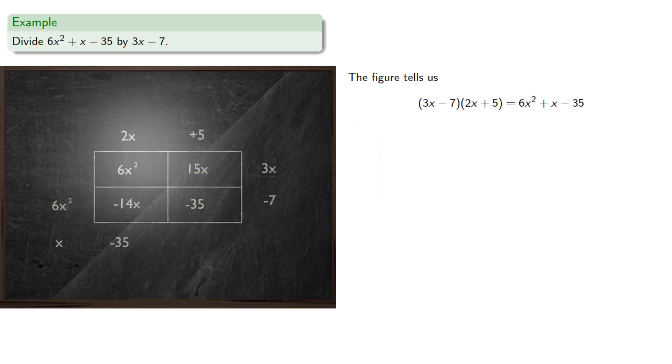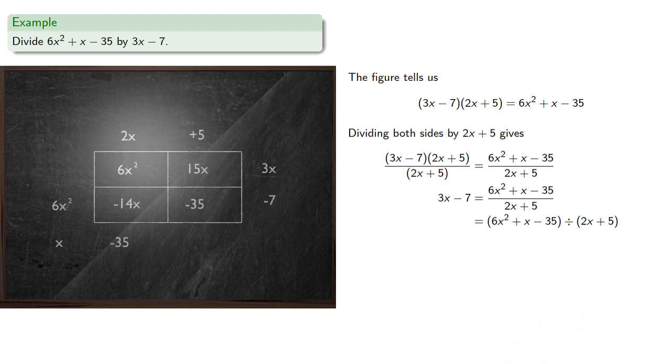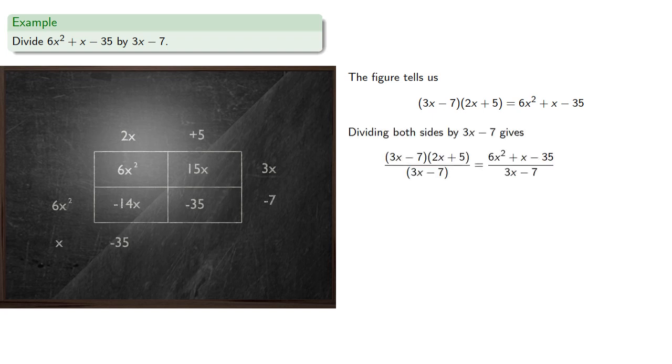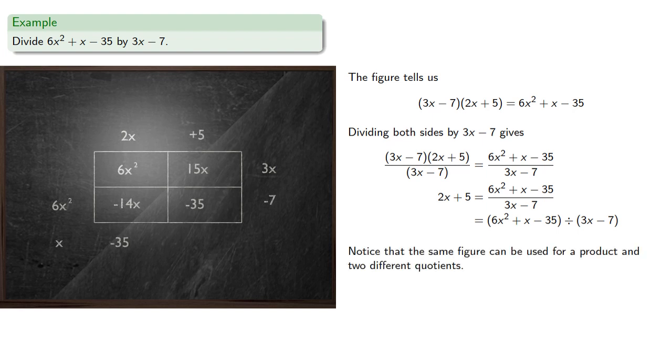For example, we can rearrange by dividing both sides by 2x plus 5, and rearranging gives us 3x minus 7 equals 6x squared plus x minus 35 divided by 2x plus 5. And so this is the answer to a different question. This is still not the problem we're trying to solve. But we could divide by 3x minus 7 instead. And here's a useful thing to notice: the same figure can be used for a product and two different quotients. We're in a really unusual situation in that we have a buy one get two free.